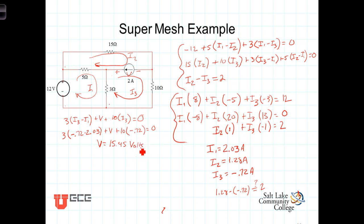All righty, now looking at this source, we see the current is referenced into the negative terminal of our voltage and leaving the positive terminal, so it's acting as a source. And we can then say that the power being generated by that source is equal to negative I times V, which is equal to negative I, which is 2, times V, which is 15.45.